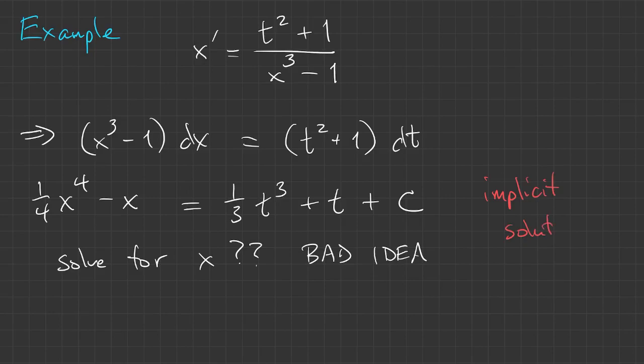An implicit solution means that there's some function of t and x that equals 0. That's more general than an explicit solution where x is a function of t.